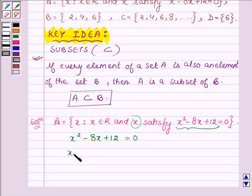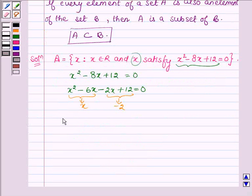On splitting the middle term, -8x can be written as -6x - 2x, then we have +12 = 0. Now taking x common from the first two terms and -2 common from the next two terms, it can be written as x(x - 6) - 2(x - 6) = 0.